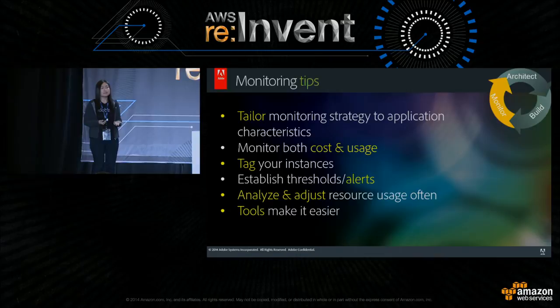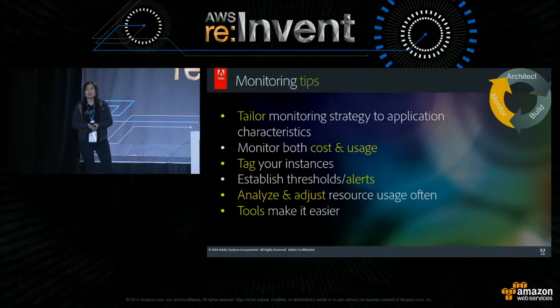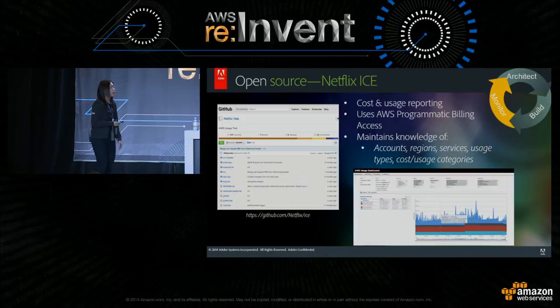You're collecting all this data from your monitors, and based on this data you can iterate your architecture and adjust your resource usage. For all of these techniques, don't try to do it yourself — tools will make life a lot easier. Constantine is going to talk about the AWS tools that will help, and I'll cover a couple of other tools we use at Adobe.